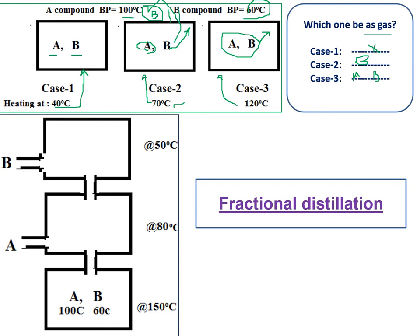Let us look at this in another way. A and B are present together. At 150 degrees centigrade, both A (boiling point 100°C) and B (boiling point 60°C) become gases and move into the next chamber. Now I decrease the temperature of the chamber to 80 degrees centigrade. A's boiling point is 100 degrees, but I am maintaining only 80 degrees, so A becomes a liquid.